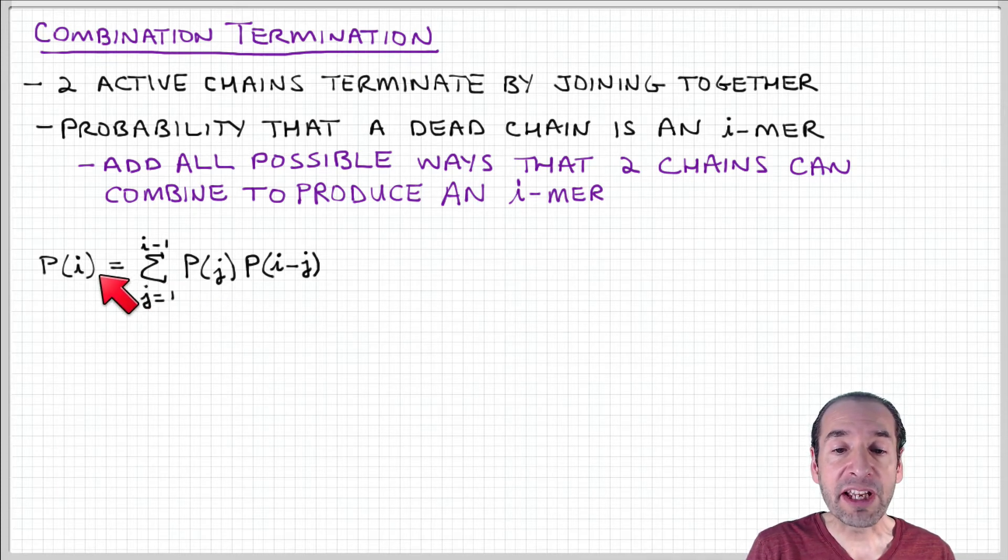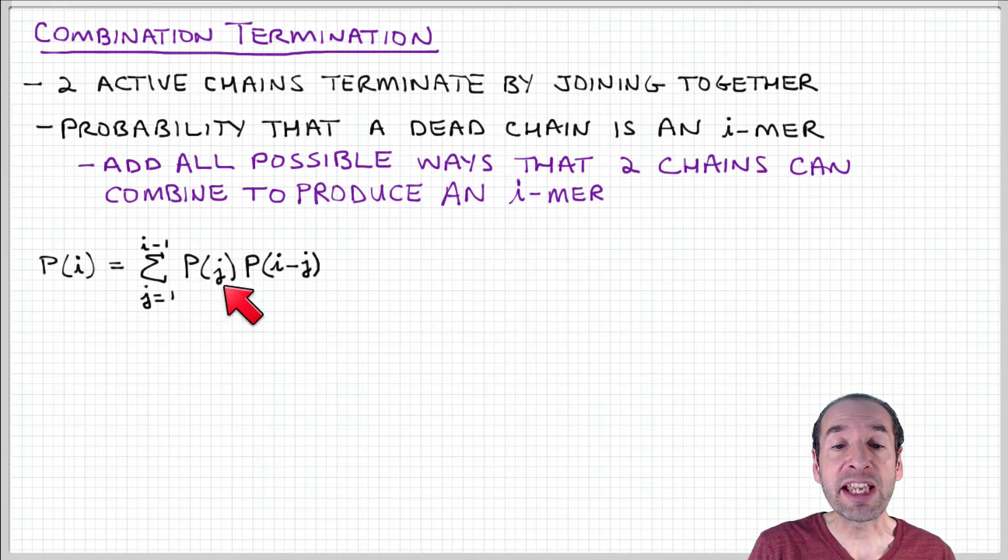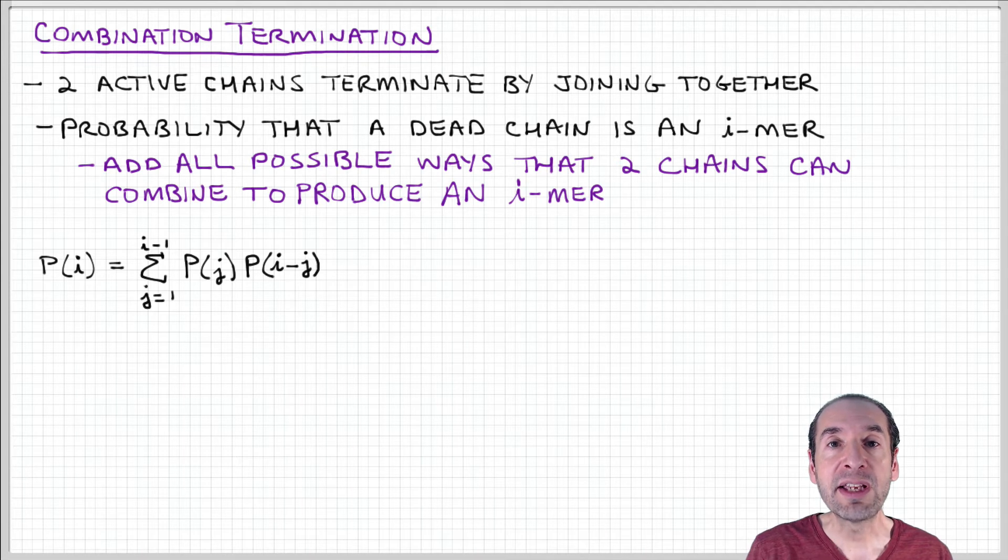The probability of an i-mer is the sum of the probability that a chain has length j times the probability that a chain has length i minus j, that those two come together to experience a combination termination interaction.